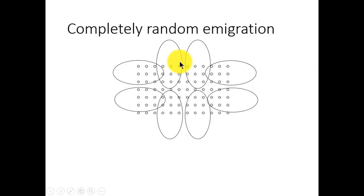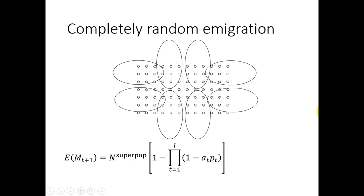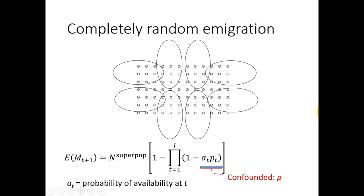In this cartoon, the points represent a trapping grid on a study area, and the ovals are the home ranges of individuals. We're talking about emigration from the study area to the surrounding landscape. When emigration is random, then M at t+1 — the number of individuals in the grid — is biased high, but the number of individuals in the superpopulation is unbiased. Here, alpha represents the probability of availability at time t. When individuals emigrate, availability and detection are confounded. If we can estimate availability using auxiliary data, then we can correct the bias in the number of individuals in the study area.